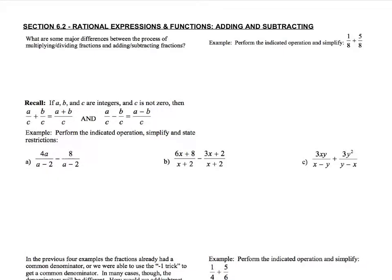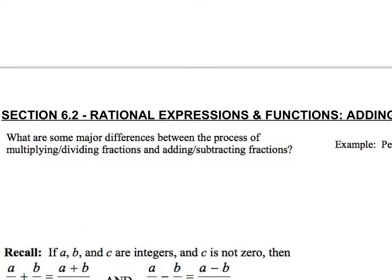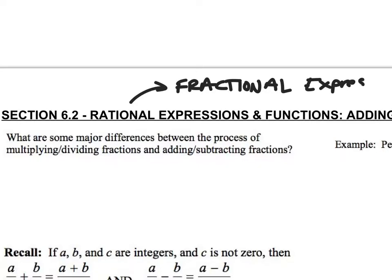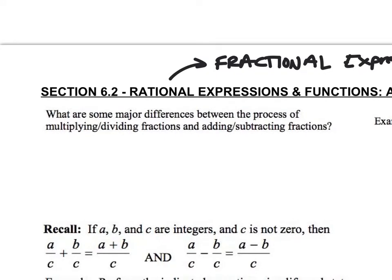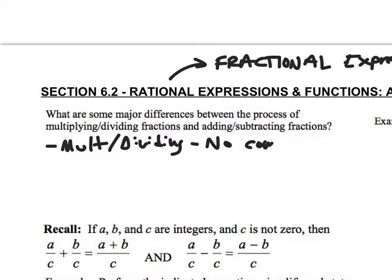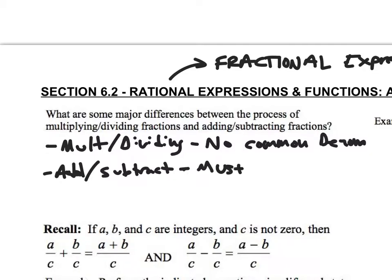Rational expressions and functions — rational expressions are just fractions, fractional expressions. What are some major differences between the process of multiplying/dividing fractions and adding and subtracting fractions? When multiplying or dividing, we don't have to have common denominators — no common denominators needed. But when we add and subtract, we must have common denominators.